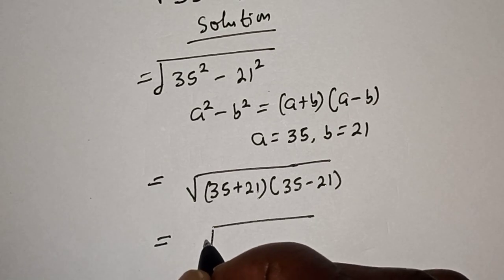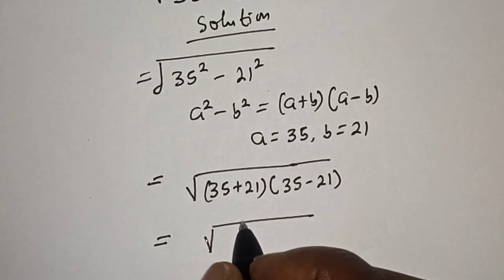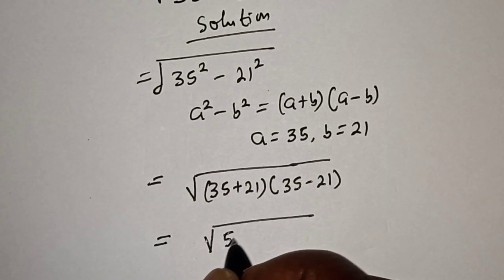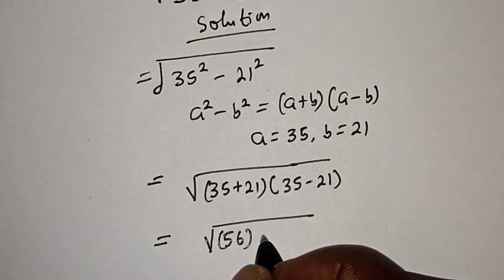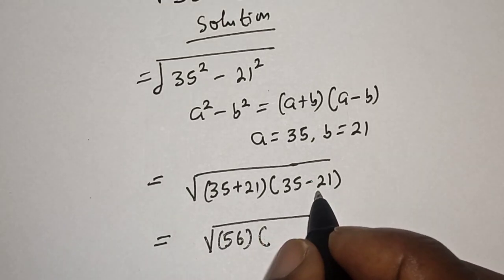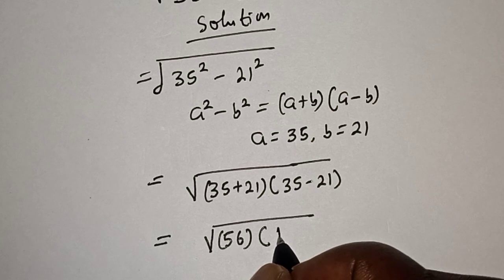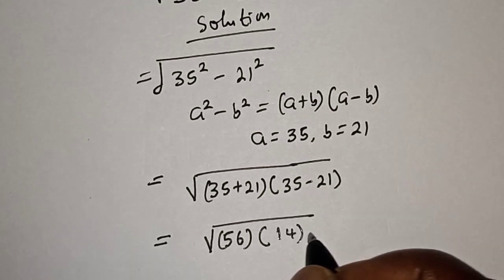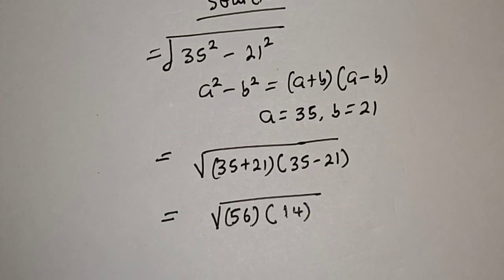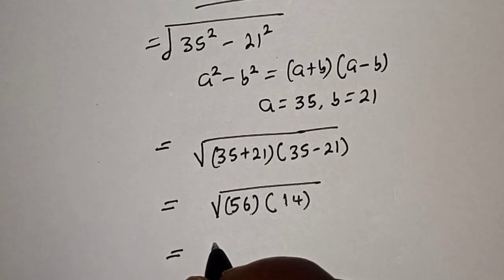And this is equal to square root of 35 plus 21, that is 56, multiplied by 35 minus 21, which is 14.